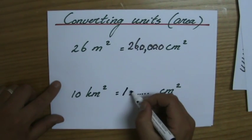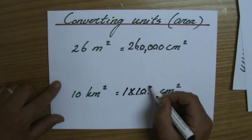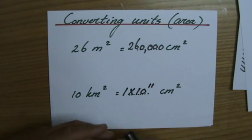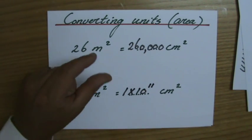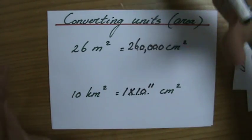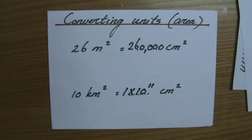One times ten to the power eleven centimeter square into ten kilometer square. That is a huge amount, but a centimeter square is small, so many of them will fit into ten kilometers squared.